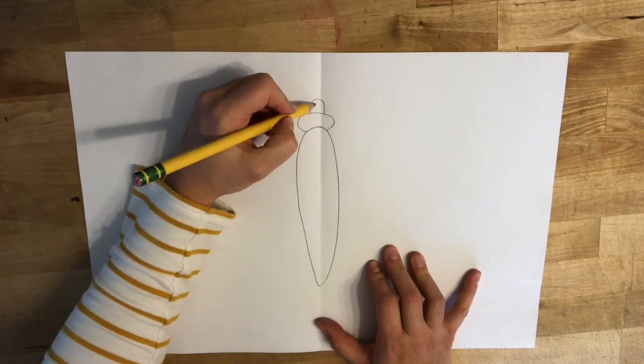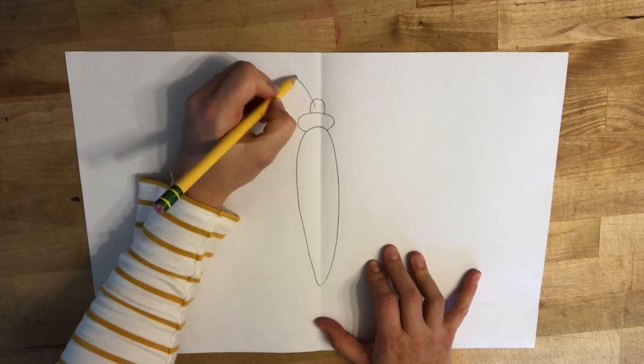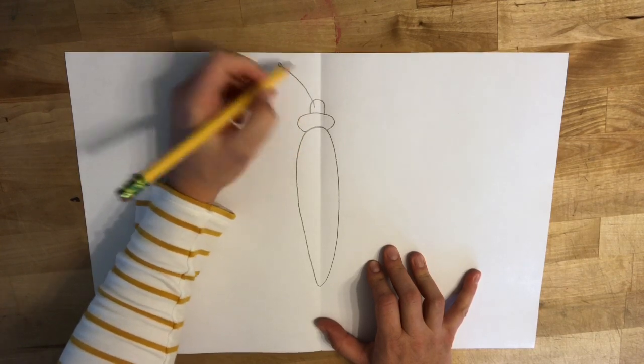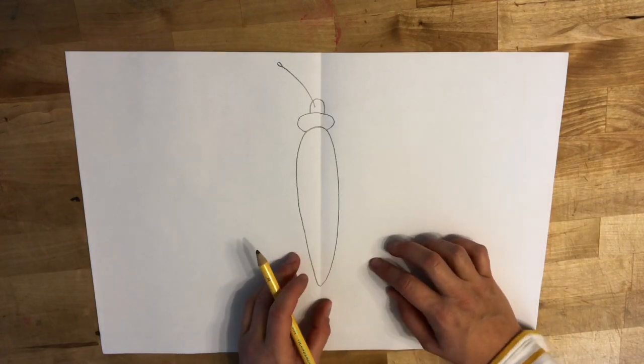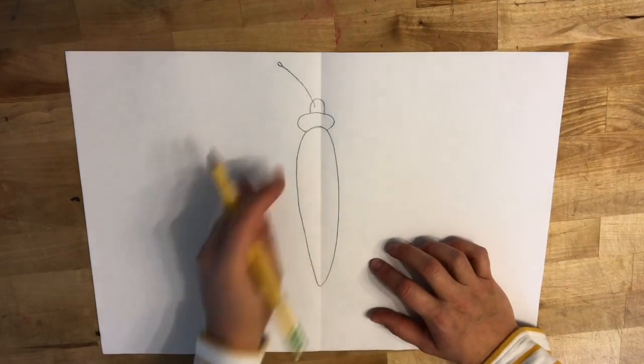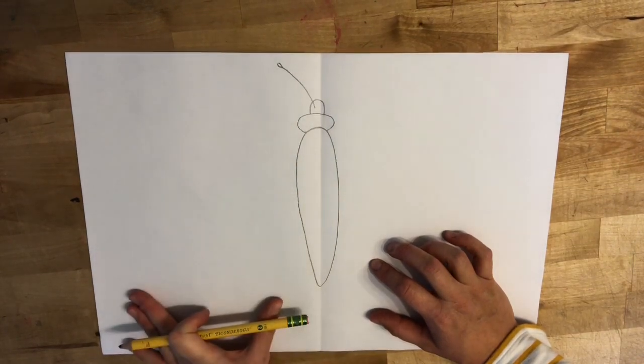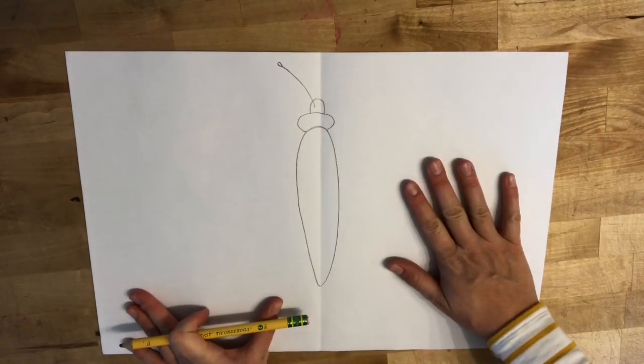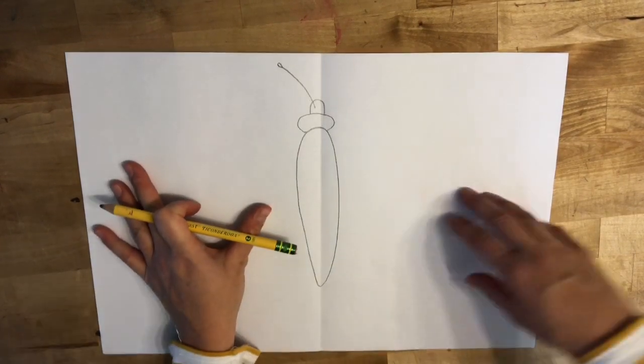But remember, since I'm only drawing half of my butterfly, I only have to draw one antenna if I want. Now I'm going to work on my drawing, but I'm only drawing the wings on this side of the paper. I don't have to worry about this side. If you want to draw yours on the right, that's okay, but I'm going to do mine on the left.